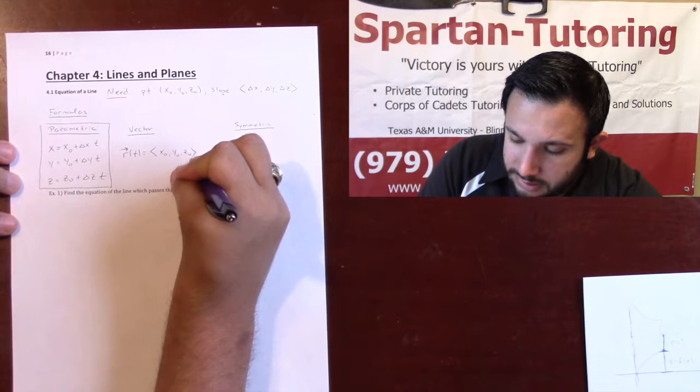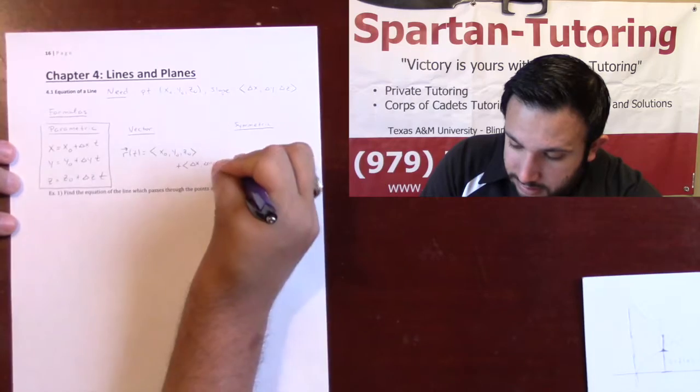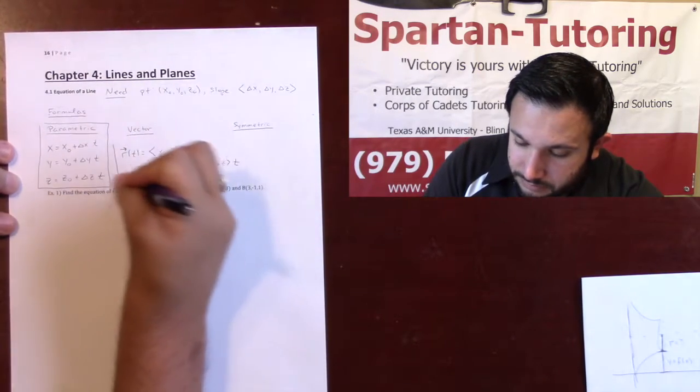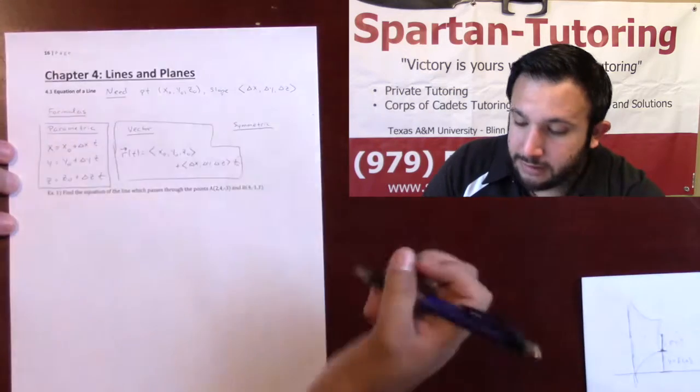plus some delta x, delta y, delta z, times t. This is how you would write it if they want it as a vector equation.